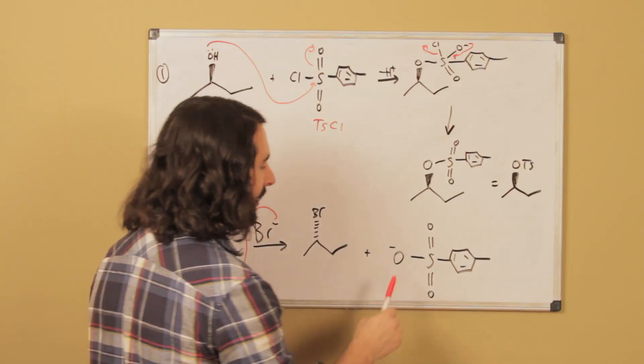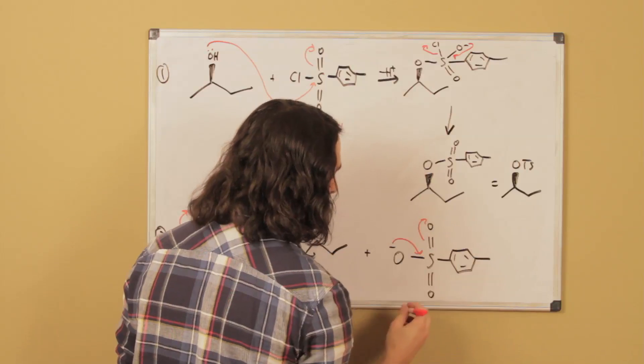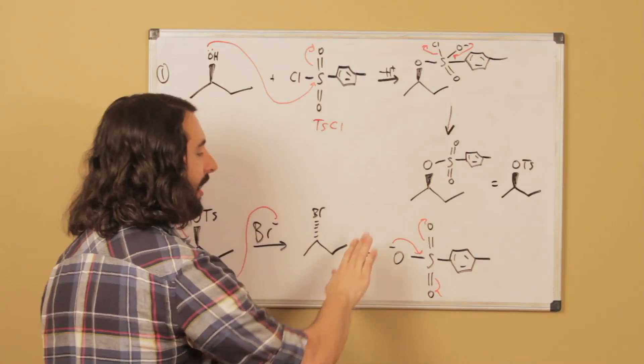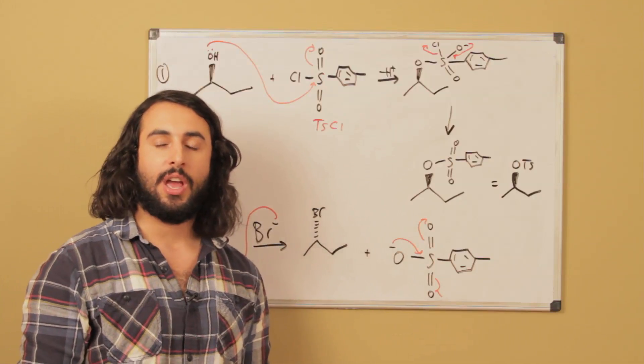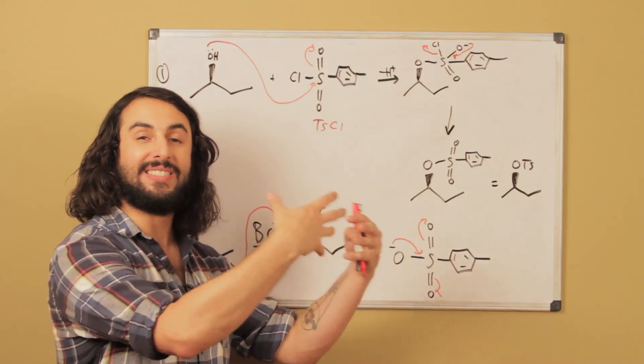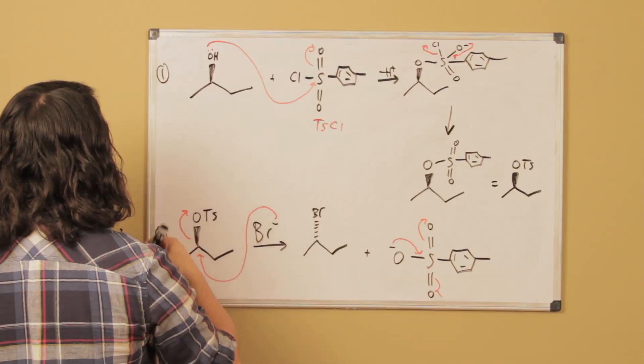And then the reason that's going to work is because when O-tosyl leaves, this is O-tosyl, look at all that resonance. We are going to be able to put resonance up there, resonance down there. And so remember that the leaving group ability of some group has to do with its stability once it has left.